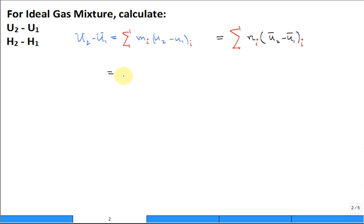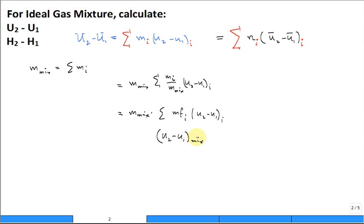Let's take this equation. We've introduced that the mass of the mixture is equal to the sum of the masses of each of the components of the mixture. So if we take this equation and we multiply by mass of the mixture, and over here we have the sum of each component divided by the mass of the mixture times U2 minus U1, we see that we pick up the mass of the mixture times the sum of the mass fractions times U2 minus U1. You would write this as a change in internal energy U2 minus U1 of the mixture where that's equal to the sum of the mass fractions times U2 minus U1 for each component.